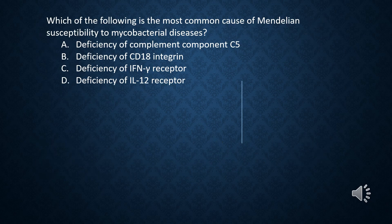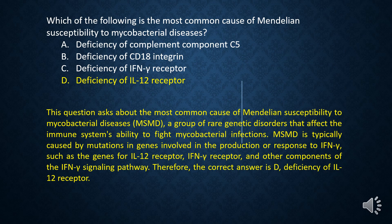This is an easy one. Which of the following is the most common cause of Mendelian susceptibility to mycobacterial diseases? A. Deficiency of complement component C5. B. Deficiency of CD18 integrin. C. Deficiency of IFN gamma receptor. D. Deficiency of IL-12 receptor. The answer is D, deficiency of IL-12 receptor.